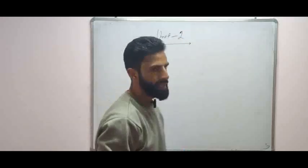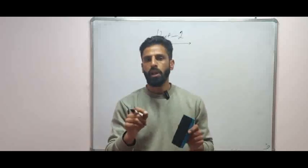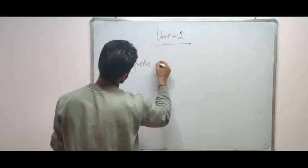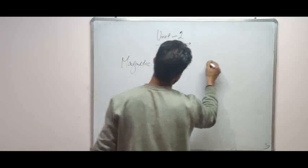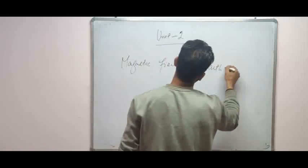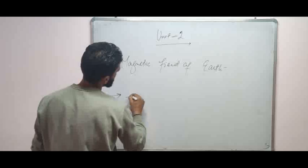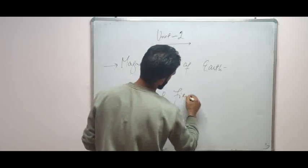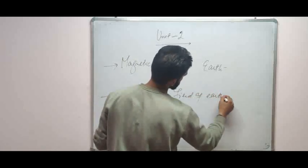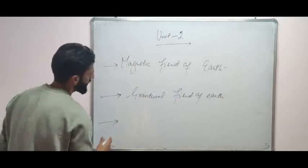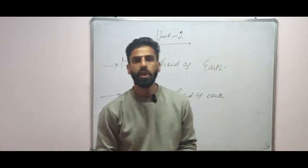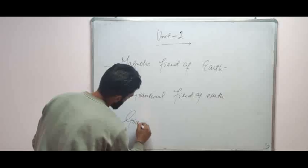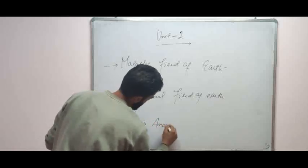Moving to Unit Two, the most important questions are: first, define the magnetic field of Earth. Second, define the gravitational field of Earth. Third, define gravity anomaly and its types.